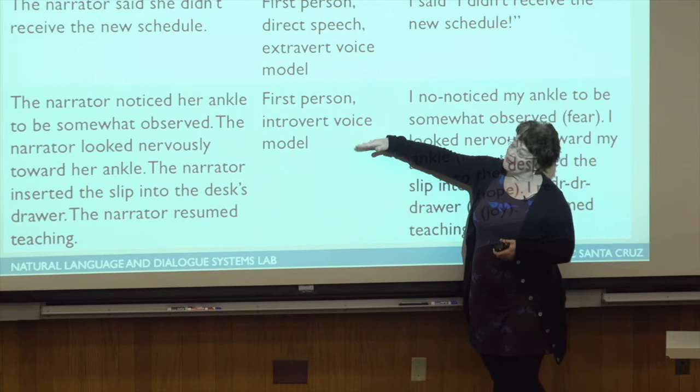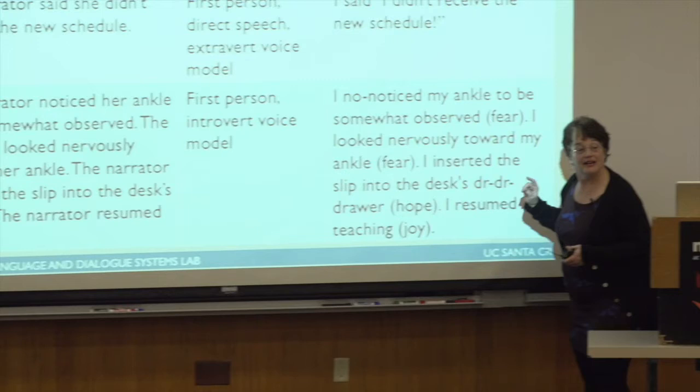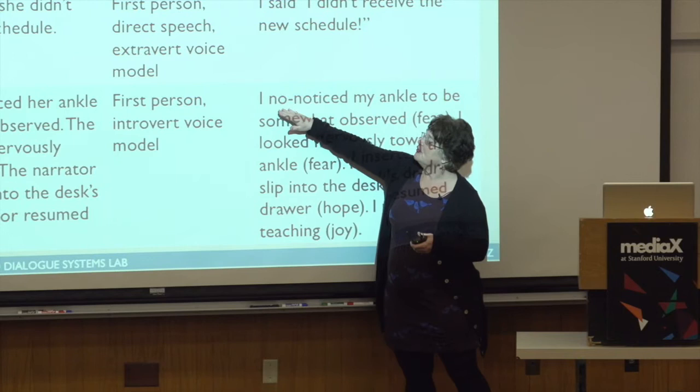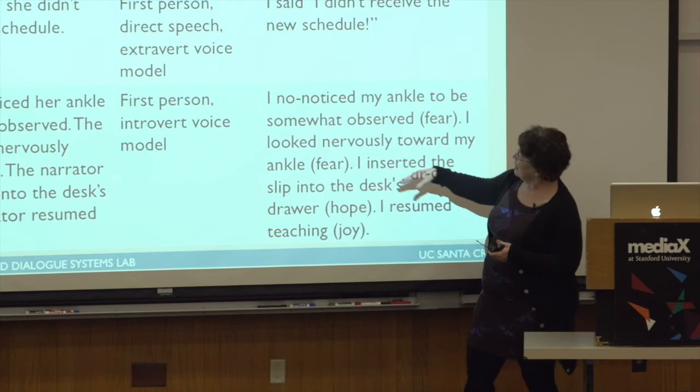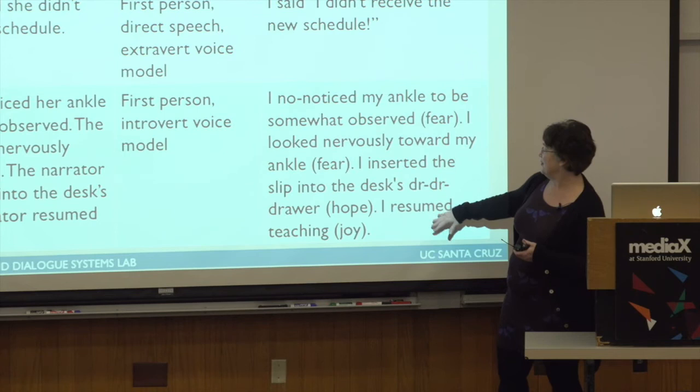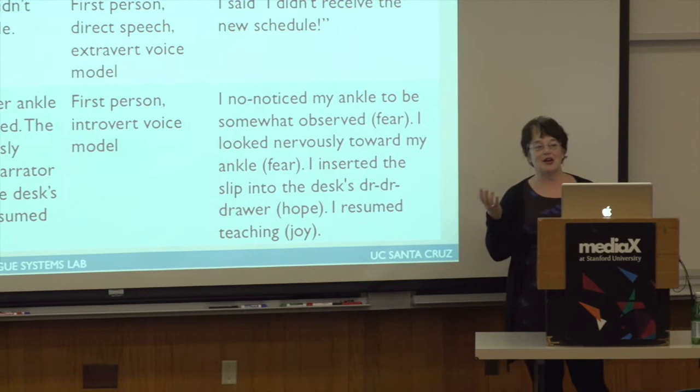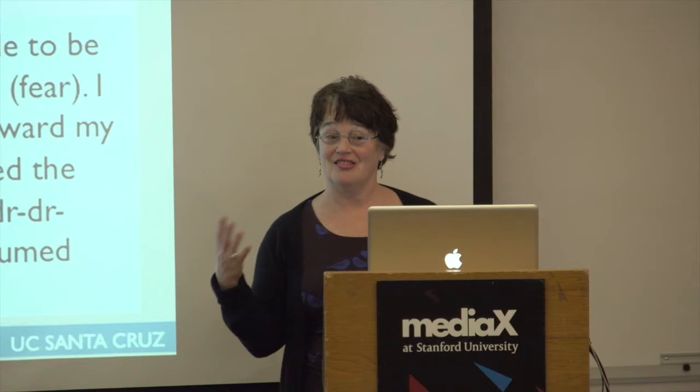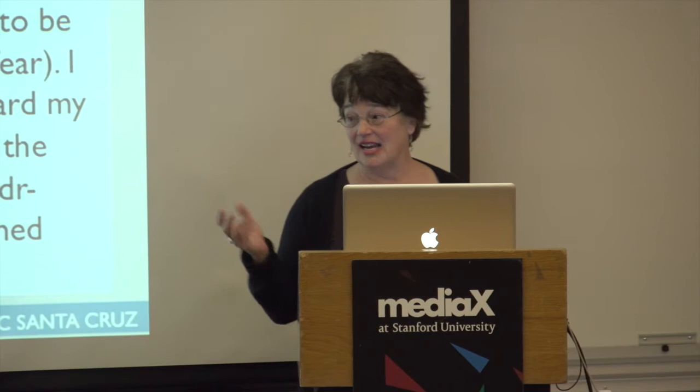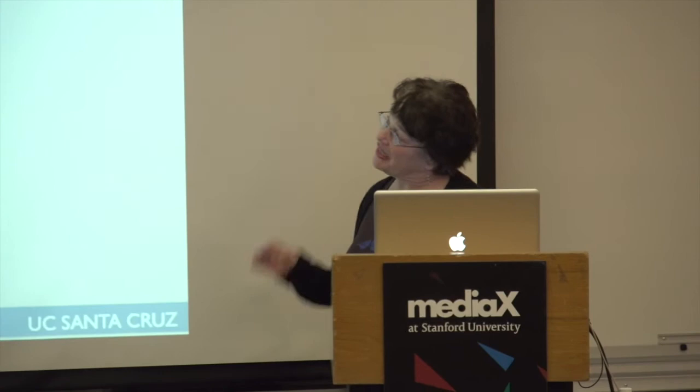We can do the first person but with an introverted voice model instead of the extroverted one. Some of the things introduced with this introverted voice model are hesitations in the speech and hedging — like 'somewhat observed' — and 'I resume teaching.' Our automatic generation mechanisms aren't perfect, but we can generate thousands and thousands of variations of any particular sentence in any particular story.